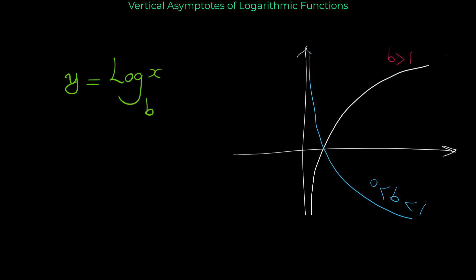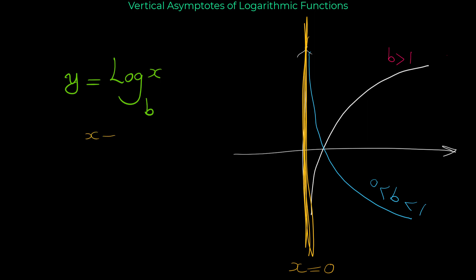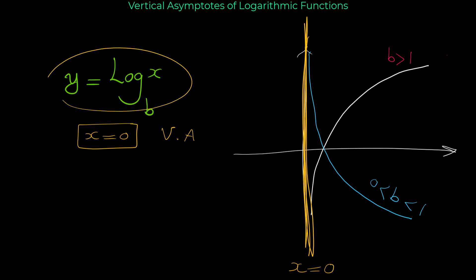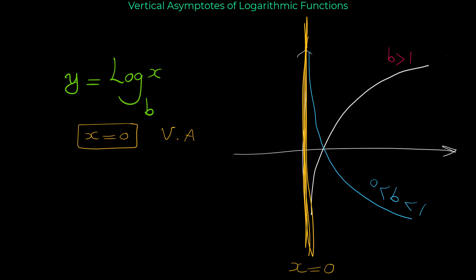But as you can see, both shapes have something in common: the vertical asymptote. This line — the y-axis — is the vertical asymptote for both of them. So it doesn't matter what the base is: x equals zero is the vertical asymptote for log x in base b.